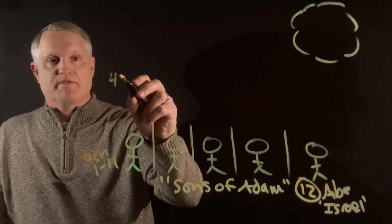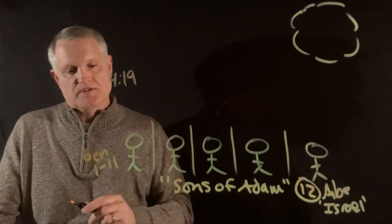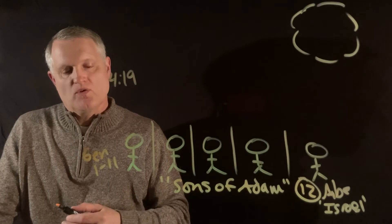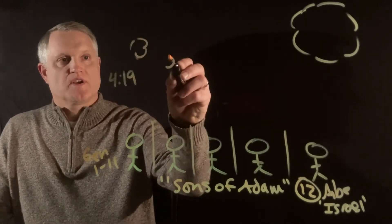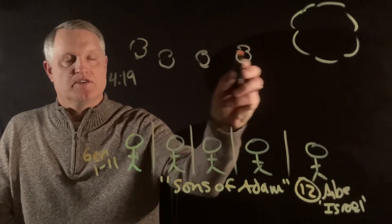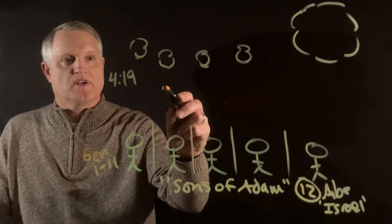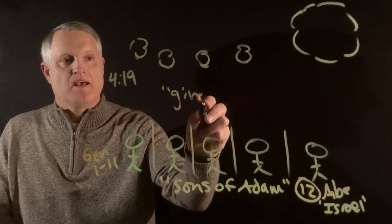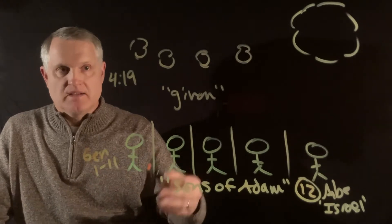In Deuteronomy 4:19, he says, and here's the verse: the host of heaven, which the Lord your God has given to all the peoples under the whole heaven as a heritage or an inheritance. Again, the host of heaven, which the Lord God has given. Now, that word usually is translated in Hebrew as divided.